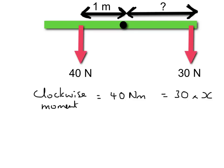Now we can work out what x is. x is going to be equal to 40 newton metres divided by the force of 30 newtons, so that gives us 1.3 metres. Problem solved.